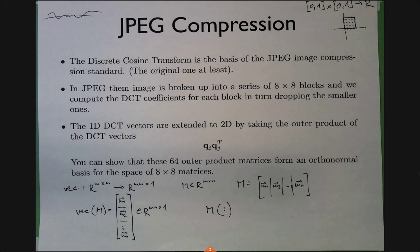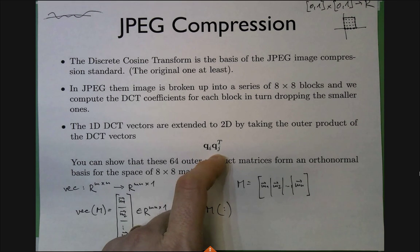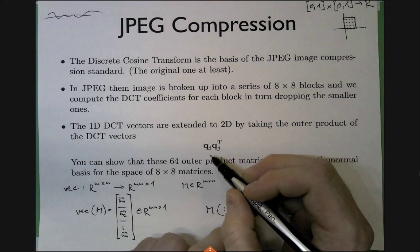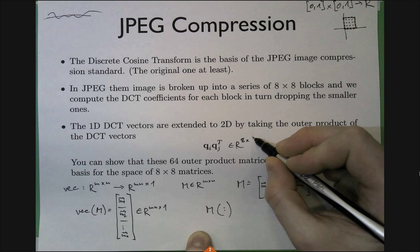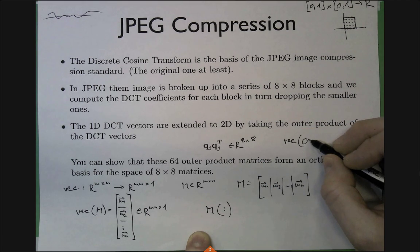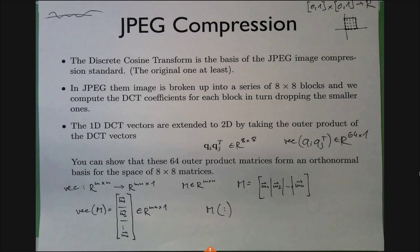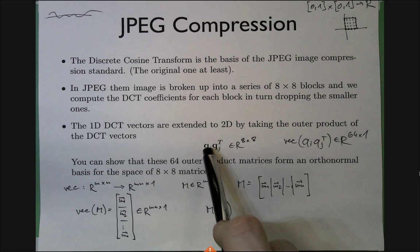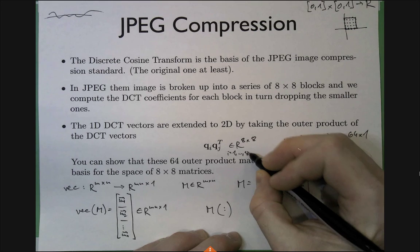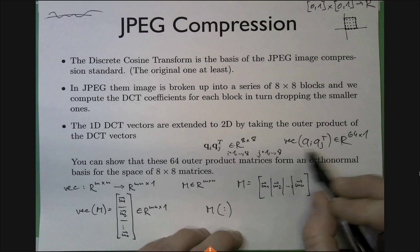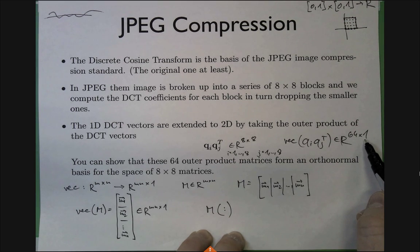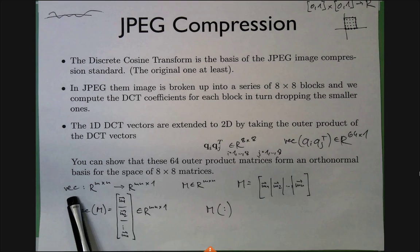Going through all combinations of i and j from 1 to 8 gives 64 vectors of dimension 64. It turns out these form an orthonormal basis — there's a beautiful proof using vectorization and trace, but we haven't done trace yet. If you want to test it in MATLAB, nothing is easier: just compute the outer products and check orthonormality.